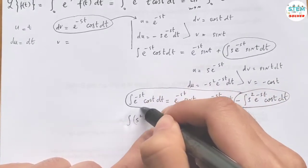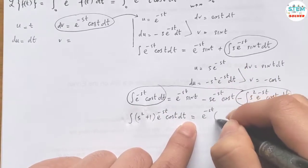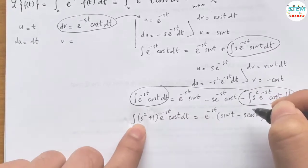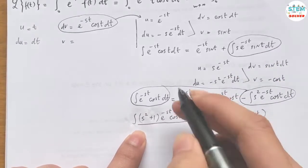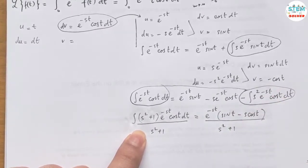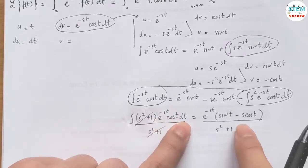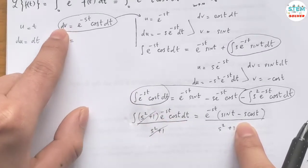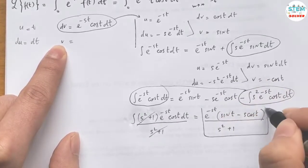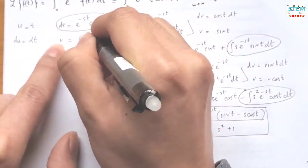Moving the integral to one side and factoring out e^(-st), we solve for the integral of e^(-st)·cos(t) dt, getting a closed-form expression. Let me box that result and bring it back up to continue.